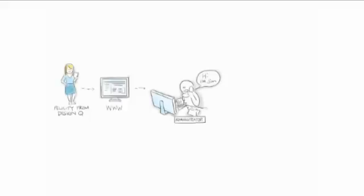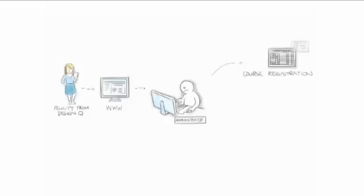So Felicity goes and fills out that registration form and an email is sent to our friend Jim. Jim's at the heart of your business — Jim makes it tick. Now Jim runs a lot of his business on a spreadsheet. Course registrations he's set up in his spreadsheet. So he takes the information that Felicity provided, sent through to him via email, and puts it into his spreadsheet. He's getting a bit frustrated with a bit of the work there.